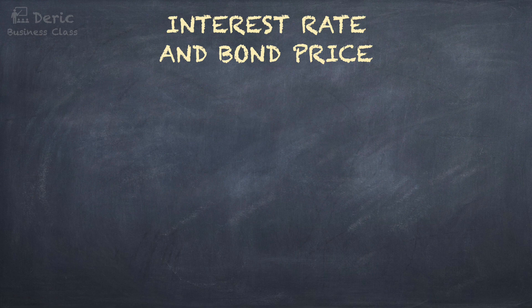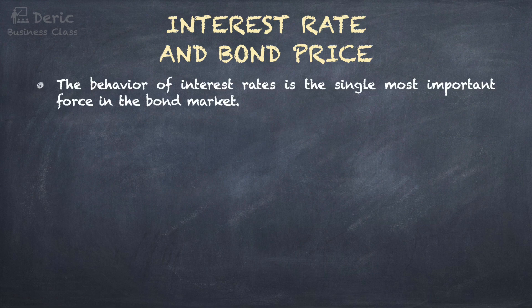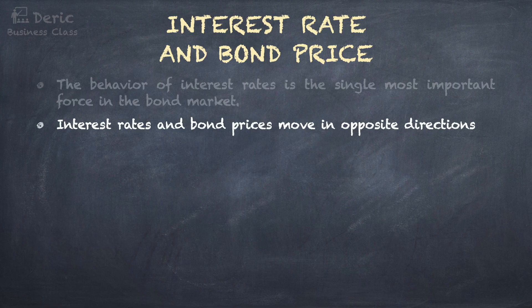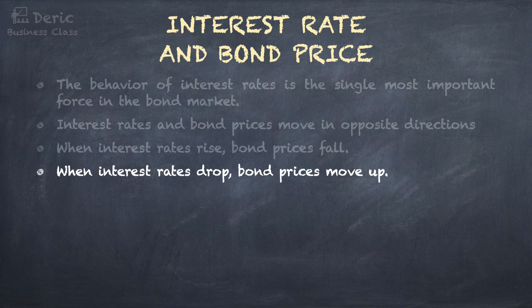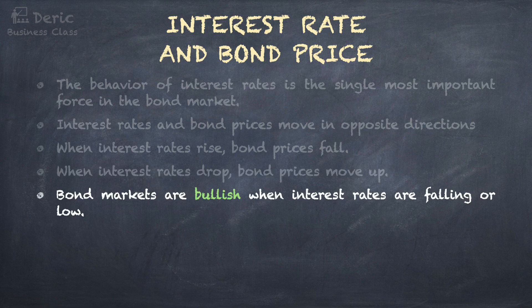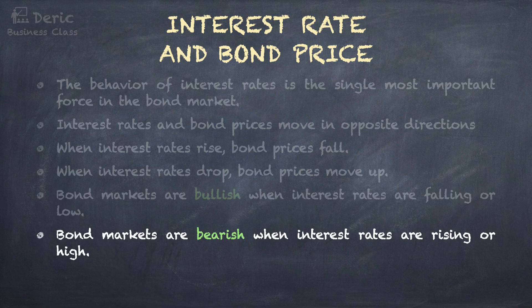Next, let's talk about the relationship between interest rate and bond price. The behavior of interest rates is the single most important force in the bond market. Interest rates and bond prices move in opposite directions — a negative relationship. When interest rates rise, bond prices fall; when interest rates drop, bond prices move up. Bond markets are bullish — meaning prices are going up — when interest rates are falling or low. This is an important strategy for government to stimulate the market. In contrast, bond markets are bearish — meaning prices are going down — when interest rates are rising or high.